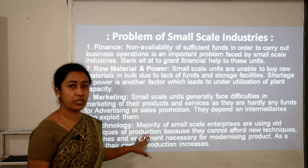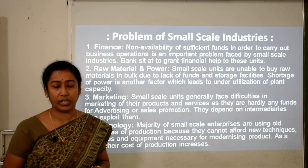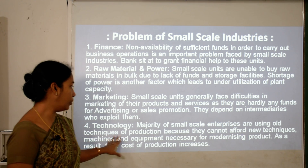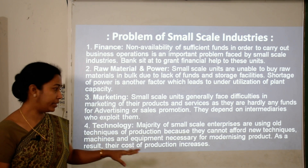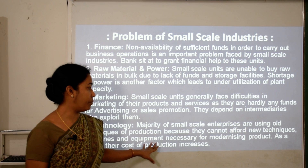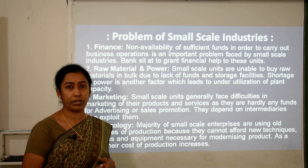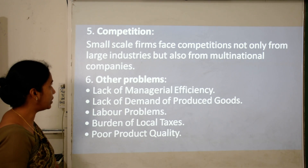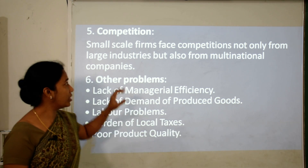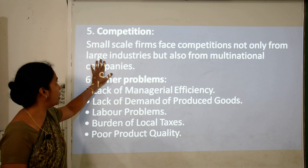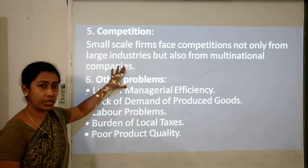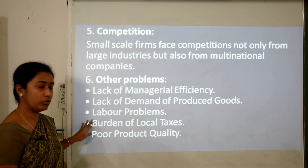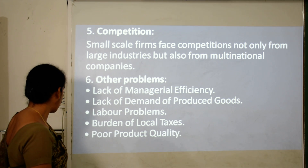Fourth, technology: the majority of small scale industries use labor-intensive techniques instead of capital-intensive techniques, and use old, outdated technology because they cannot afford new upgraded equipment necessary for modernizing production, which results in increased cost of production. Fifth, competition: these small scale firms face competition not only from large industries but also from multinational companies. Other problems include lack of managerial efficiency, lack of demand for produced goods, labor problems, burden of local taxes, and poor product quality.